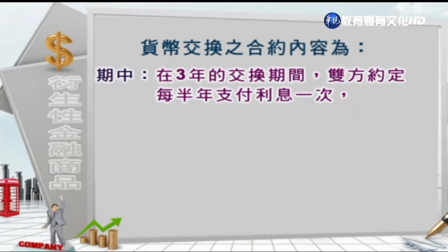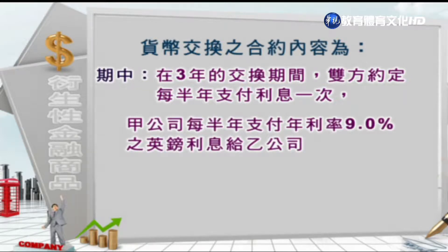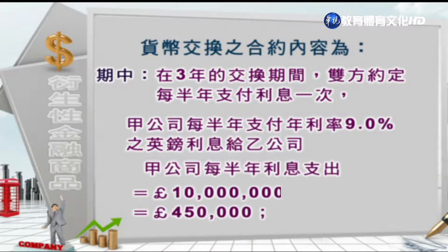期中阶段，在三年的交换期间内双方约定每半年支付利息一次，总共达到6次。甲公司每半年支付年利率9.0%的英镑利息给乙公司。甲公司每半年的利息支出是用1000万英镑乘上9%的利率，再乘以半年的二分之一，所以等于45万英镑。